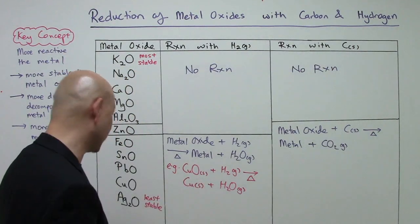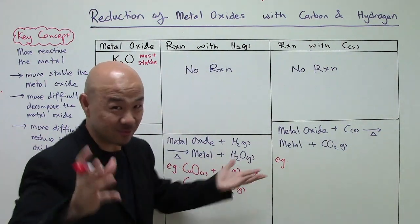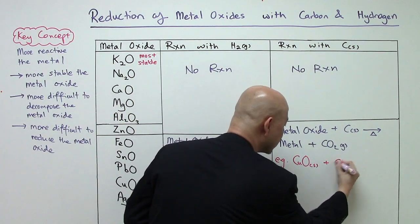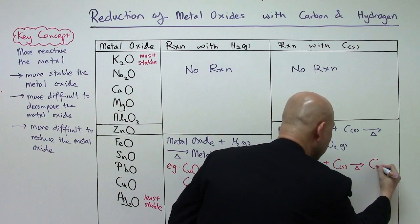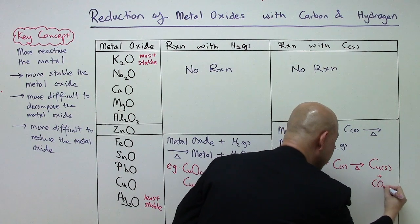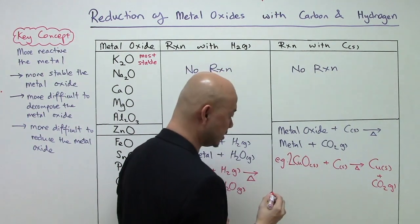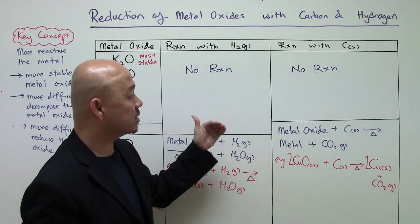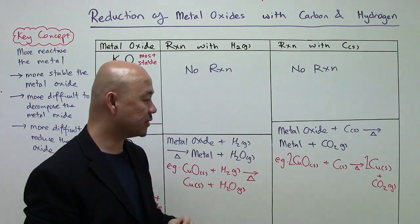For example, copper oxide with carbon, when heated, gives two products: copper metal and carbon dioxide. Balancing the equation: we put a 2 in front of CuO and a 2 in front of Cu, giving us the balanced chemical equation representing the reduction of copper(II) oxide with carbon.